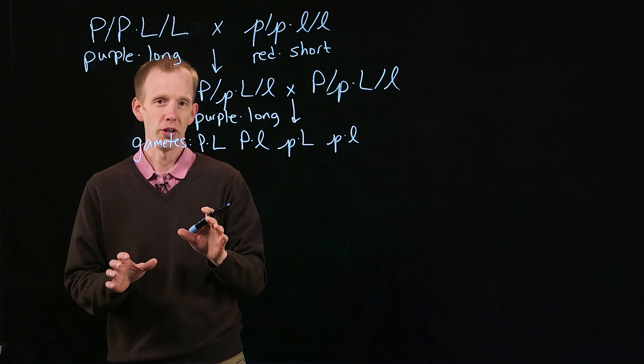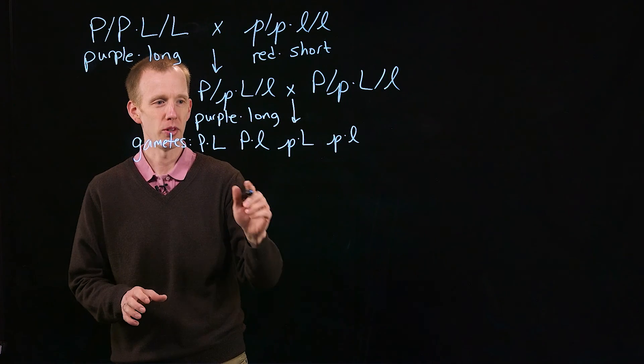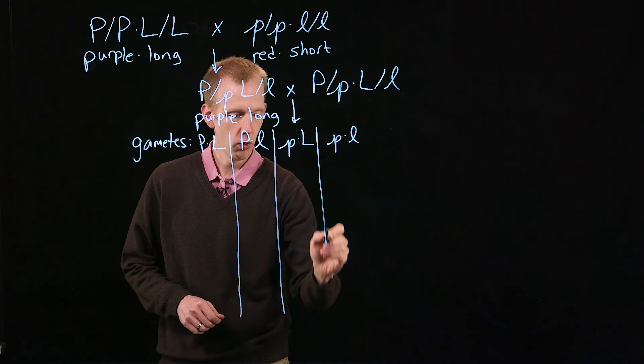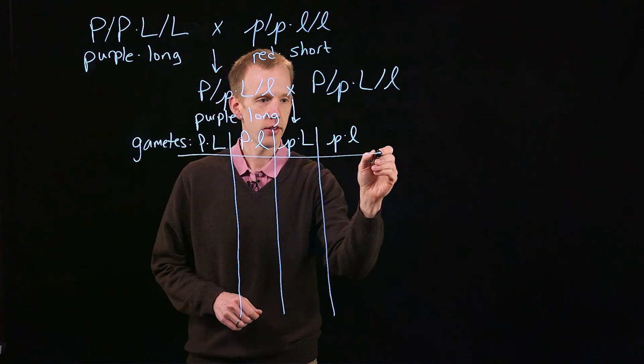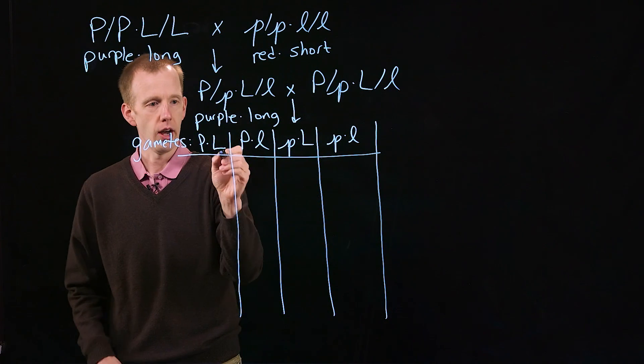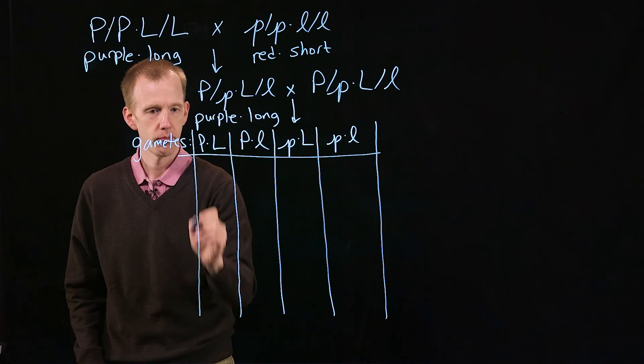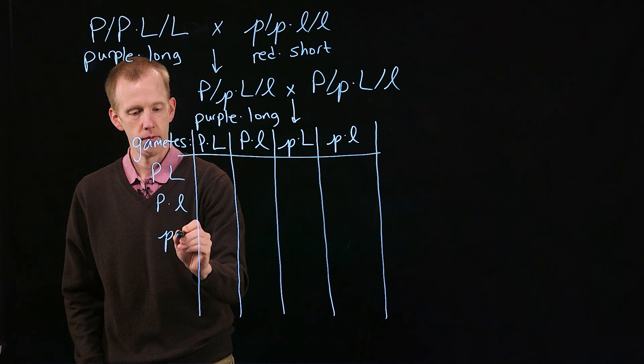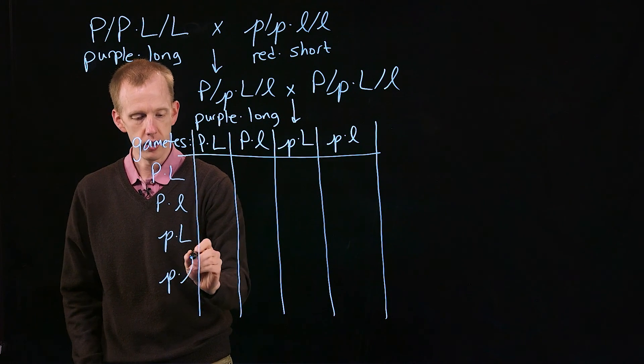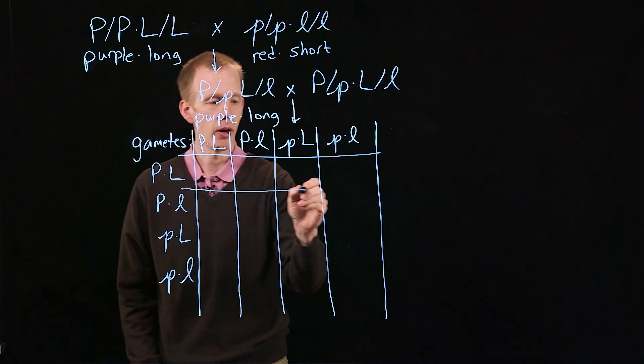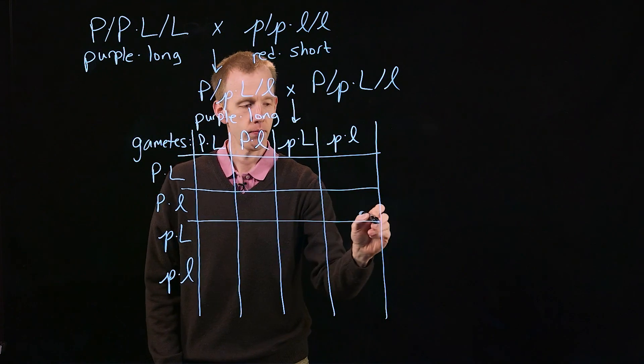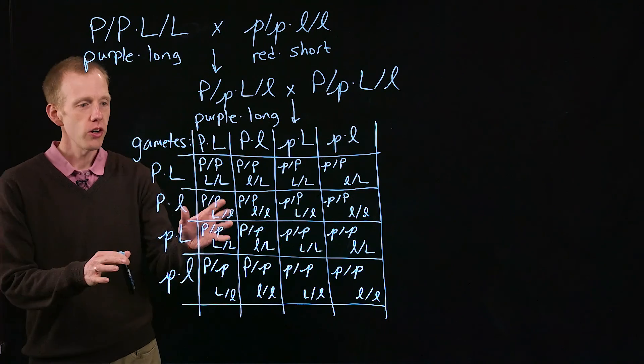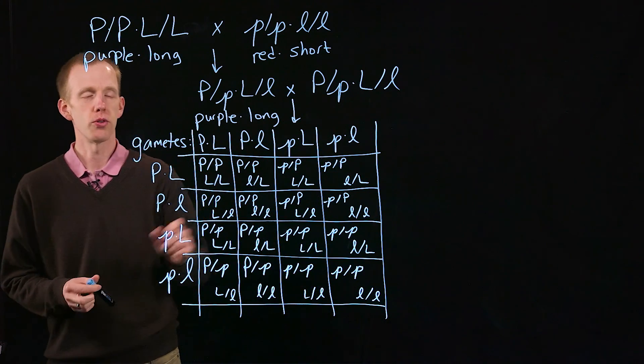Now, what I want to do next is set up the Punnett square to represent this cross. We've already written out the gametes of one parent on one axis of the Punnett square, and now we can write out the same over here. Then what we do, as always, is fill across and down to fill in the Punnett square. Here are all the different genotypes that are produced by this cross.